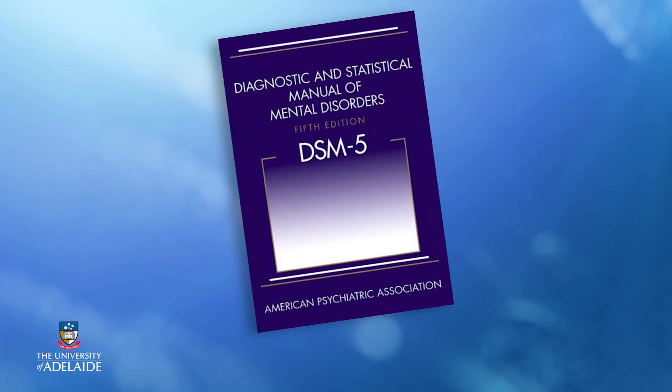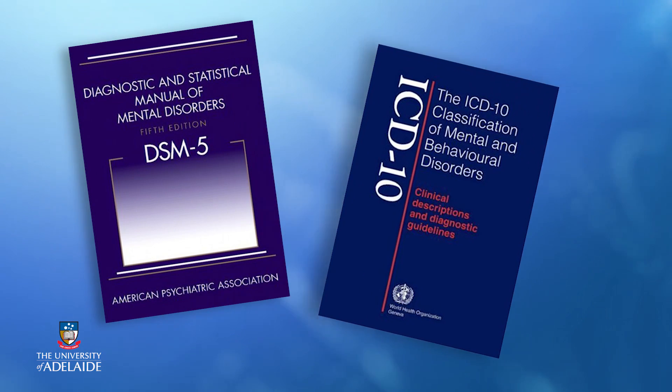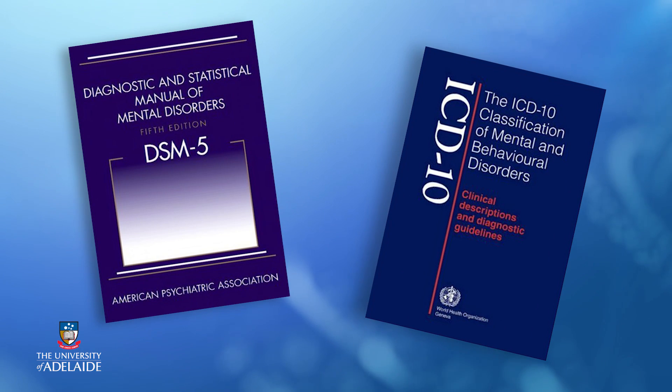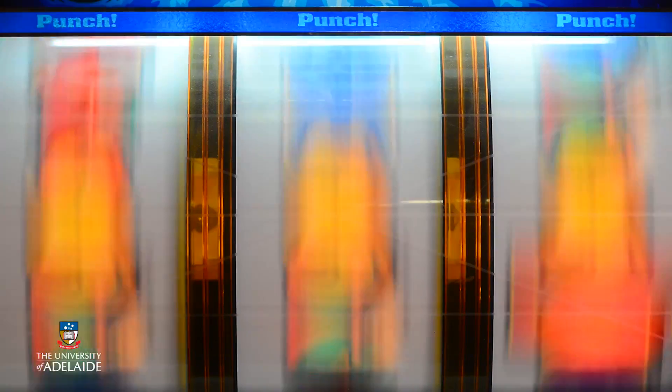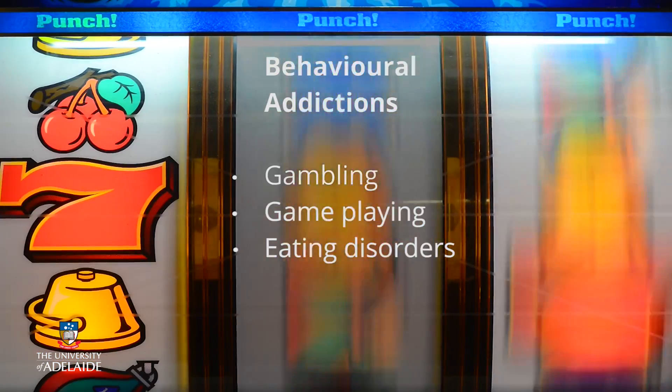There are agreed and internationally accepted definitions of addictive behaviour — for example, in the DSM, the Diagnostic and Statistical Manual for Mental Health Disorders, and the ICD-10. We will use the term addiction throughout our course to describe the compulsive use of drugs and alcohol, but of course it can also describe behavioural addictions like gambling, game-playing, and eating disorders.